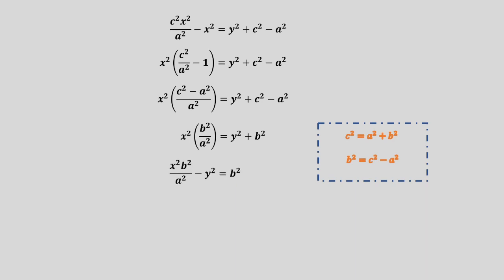Rearranging the terms gives us this equation. And dividing all the terms by b squared gives us this equation. This is now the standard form of the equation of a horizontal hyperbola centered at the origin.